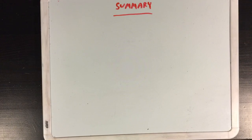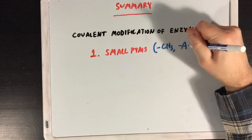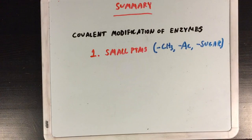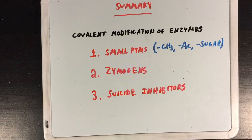So what did we learn? We talked about three very different things today that all have to do with covalent modifications to enzymes. First, we talked about small post-translational modifications, like methylation, acetylation, and glycosylation. Second, we discussed zymogens — inactive proteins that require covalent modification to become active. And finally, we talked about suicide inhibitors, which are enzyme inhibitors that permanently bind their target.